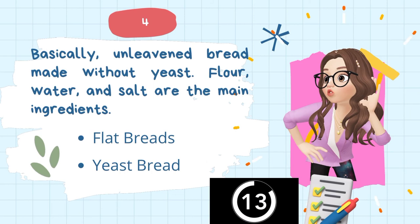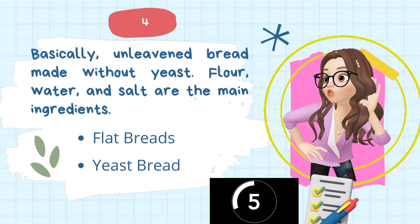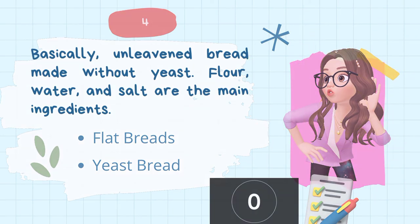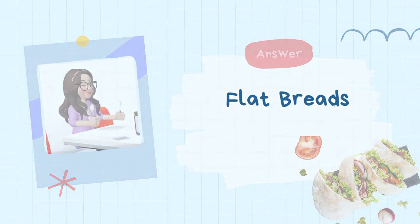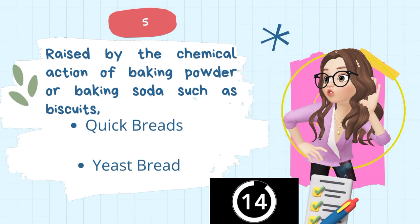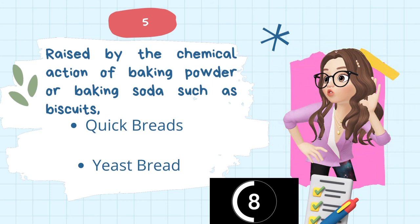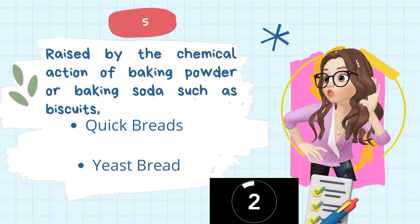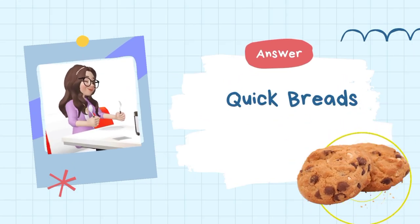4. Basically unleavened bread made without yeast — flour, water, and salt are the main ingredients. Answer: Flat breads. 5. Raised by the chemical action of baking powder or baking soda, such as biscuits. Answer: Quick breads.